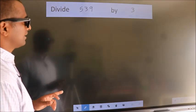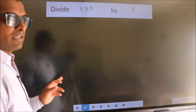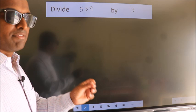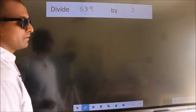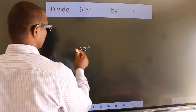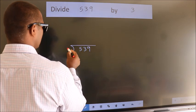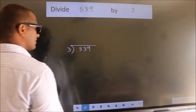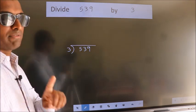Divide 539 by 3. To do this division, we should frame it in this way. 539 here, 3 here. This is your step 1.